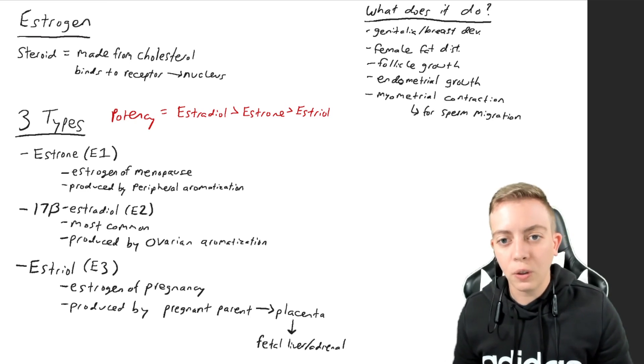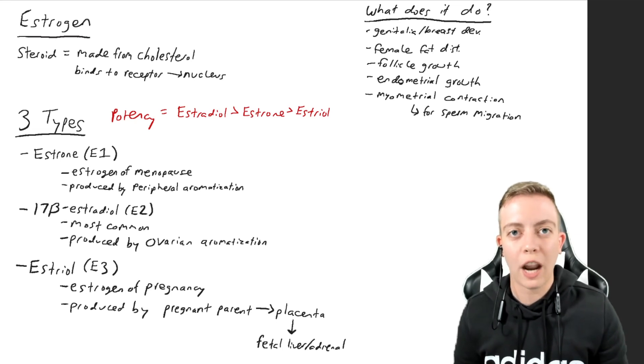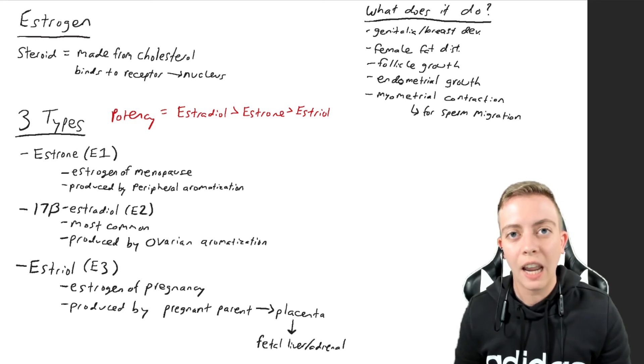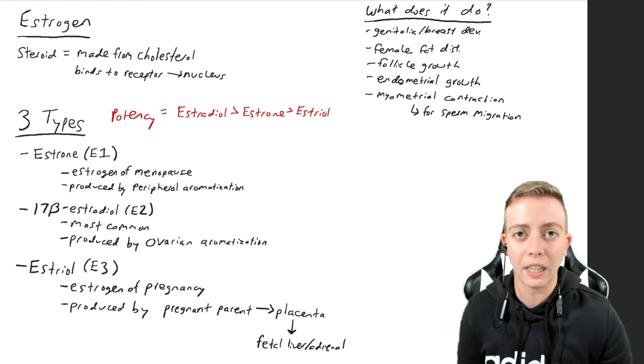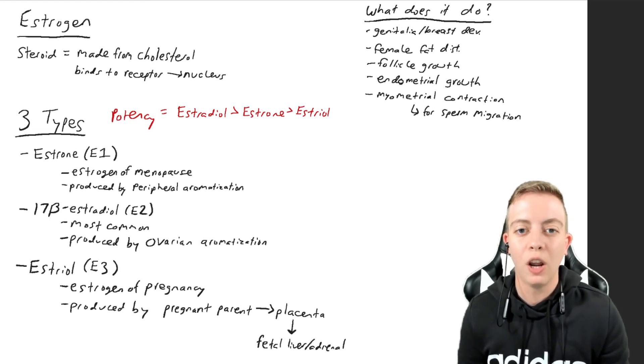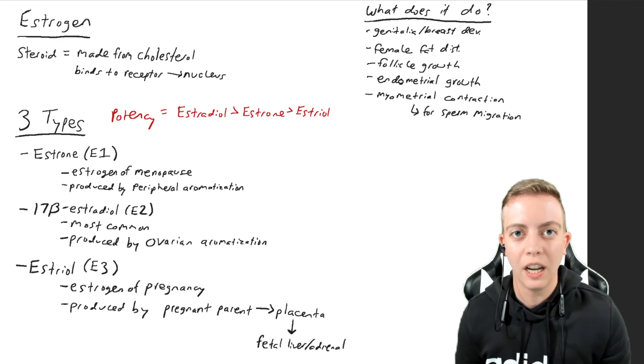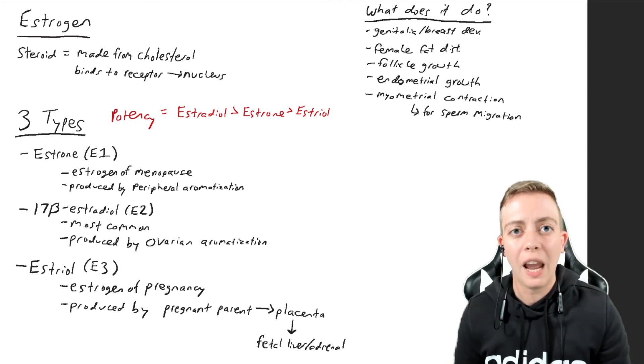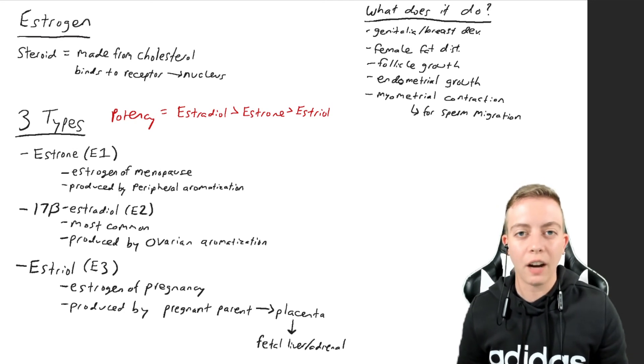It is also responsible for myometrial contraction. If the endometrium is the innermost layer of the uterus, the myometrium is the muscular layer or the middle layer of the uterus. We're not talking contraction as in pregnancy, we are talking about sperm migration. When you have an increase in estrogen and are trying to fertilize an egg, the sperm is going to have to migrate all the way to the fallopian tube. In order to do that, the myometrium is going to need to contract, and this is where estrogen comes in.